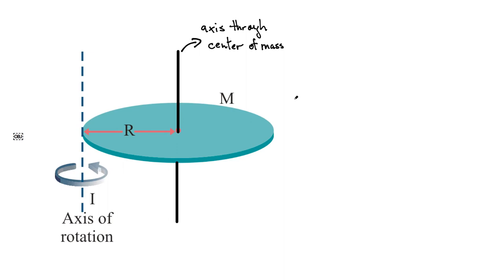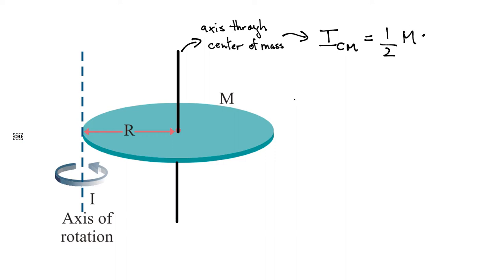Let's start with the disk shown here. It has a mass m and radius r. If I rotate the disk through the center of mass — through the axis shown by the dark black line — the moment of inertia through the center of mass you simply look up, or derive with calculus. The value is simply one-half m r squared.